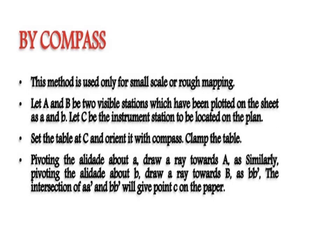Resection by compass is used only for small scale or rough mapping. Let capital A and B be two visible stations plotted on the sheet as small a and b, and let C be the instrument station to be located. Set the plane table at C and orient it with a compass, then clamp the table. Pivoting the alidade about a, draw a ray towards A. Similarly, pivoting about b, draw a ray towards B. The intersection of these two rays gives point C on the paper.